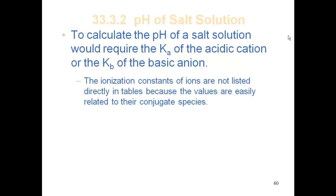The ionization constants of ions are not listed directly in tables because their values are easily related to the conjugate species. We've got the molecular species, we can determine the Ka or Kb of the ion directly from that.